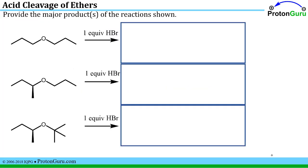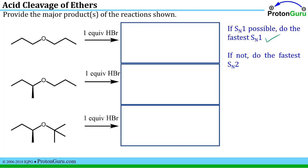We have a variety of ethers here with one equivalent of hydrobromic acid and we are asked to provide the major product of the reaction. The general rule with these acid cleavage of ether reactions is that if an SN1 reaction is possible you should do the fastest SN1 reaction. If not, you do the fastest SN2 reaction possible.